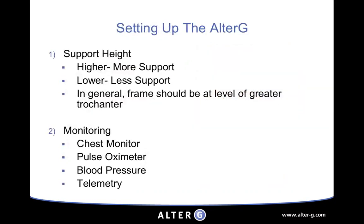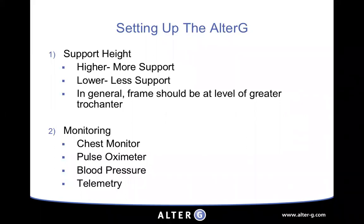Once the patient is in the anti-gravity treadmill, consider support height. The higher you set it, the more support the patient gets for trunk control; the lower, the less support and greater challenge. Generally the cockpit frame should be at the level of the greater trochanter so it doesn't affect arm swing. You can monitor patients with a chest monitor, pulse oximeter, blood pressure, or telemetry — all can be used with the anti-gravity treadmill without interference.